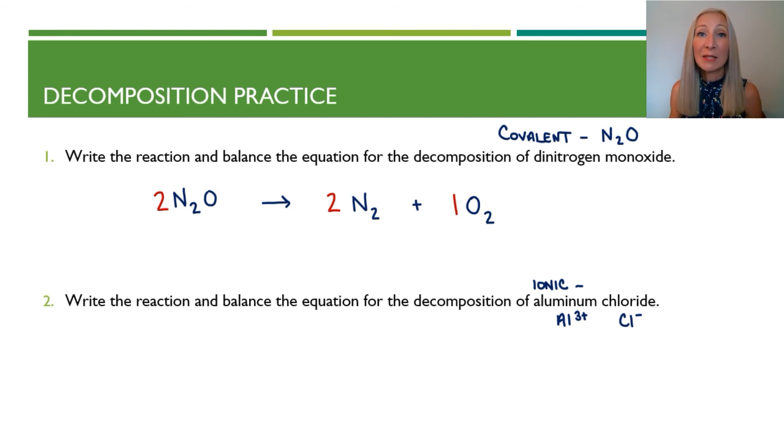So aluminum has a positive three charge. Chloride has a negative one charge, which means we're going to need three chlorides for every one aluminum ion. So we will write this as AlCl3. We're going to write this as a reactant because this is the chemical that's breaking down or decomposing. So we have AlCl3 breaks down into aluminum and chlorine.